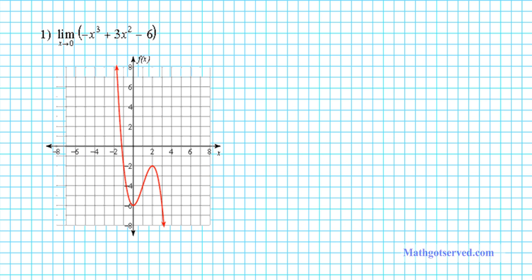Alright, let's take a look at question number one. I'm going to evaluate the limit algebraically first and then we're going to use the graph to deepen our understanding of the algebraic result I got. Using direct evaluation, what is the limit as x approaches zero of this expression? By direct evaluation, we're simply going to plug in this x value into x in the expression. So we're going to have negative zero to the third plus three times zero squared minus six.